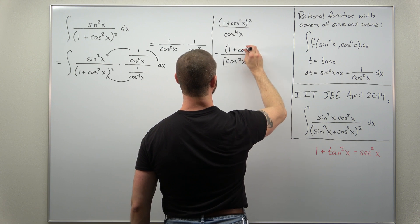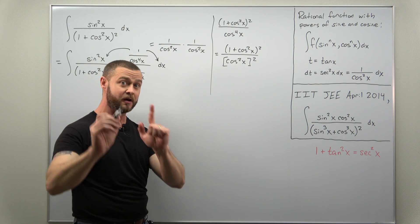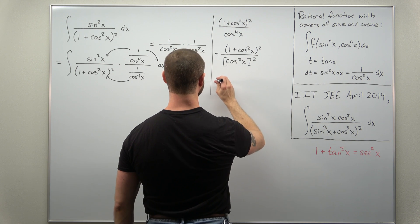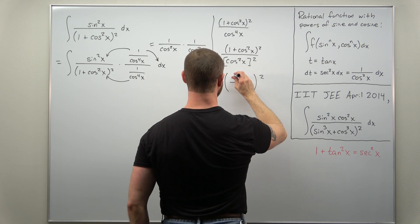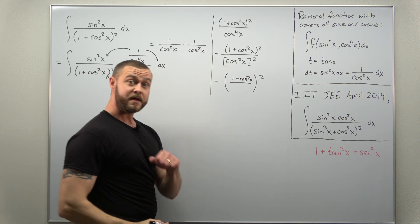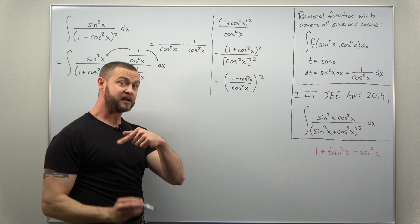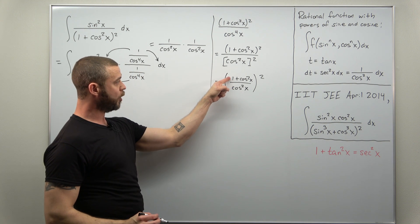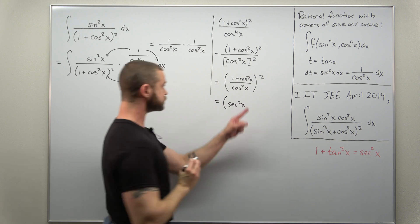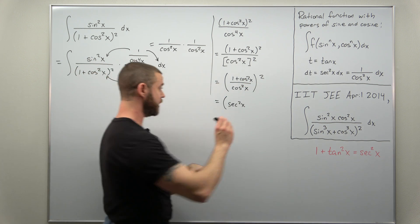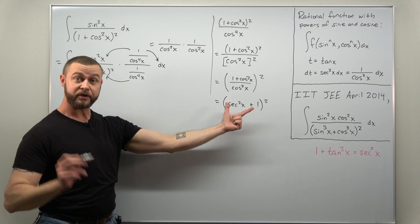Since the numerator and denominator are both raised to the same power, we can write that as a single fraction squared: the numerator will be one plus cosine squared, and in the denominator cosine squared of x. Now we can get some powers to cancel — we split that up: one over cosine squared, which we write as secant squared, and cosine squared divided by cosine squared, which is one. That is your simplified denominator.